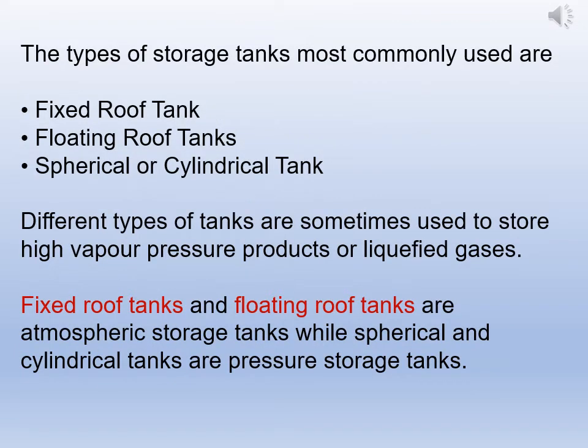The types of storage tanks most commonly used are fixed roof tank, floating roof tank, and spherical or cylindrical tank. Different types of tanks are sometimes used to store high vapor pressure products or liquefied gases. Fixed roof tanks and floating roof tanks are atmospheric storage tanks, while spherical and cylindrical tanks are pressure storage tanks.